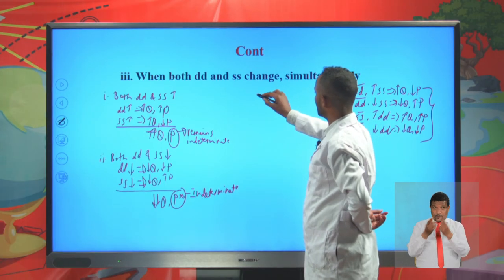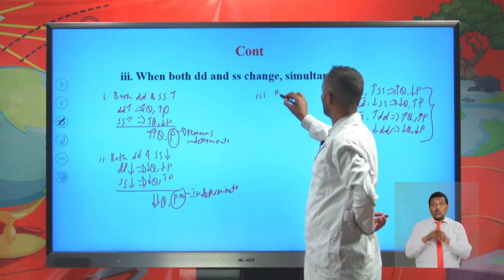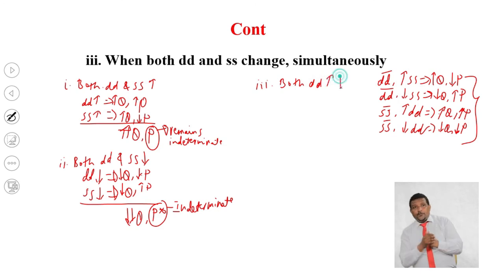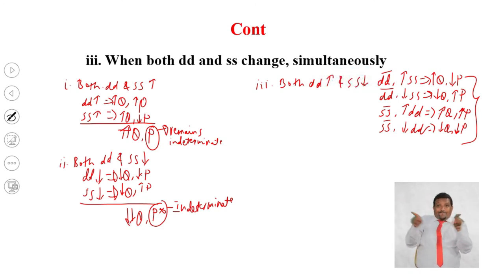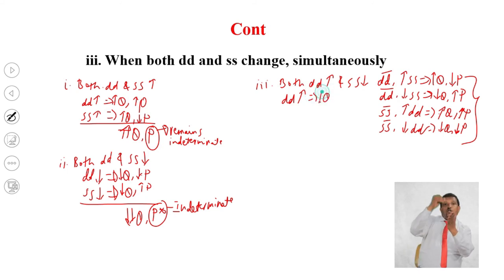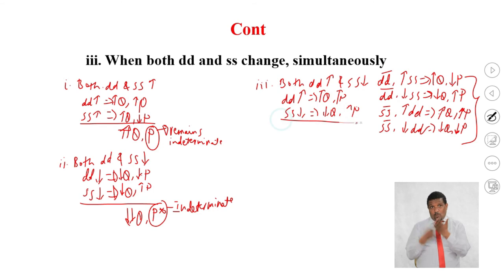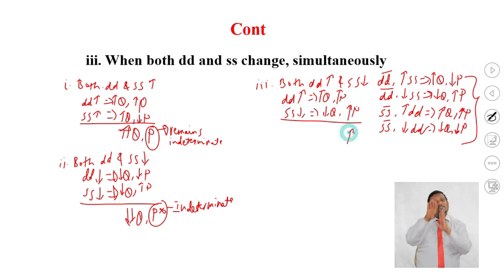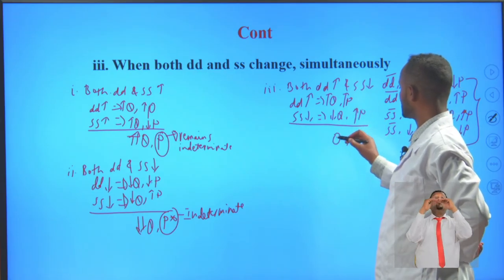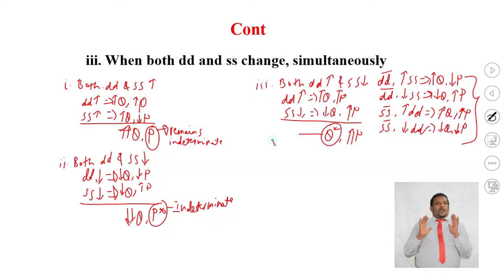When both demand increases and supply decreases simultaneously, both changes push the equilibrium price upward, so the equilibrium price will obviously increase. However, demand increasing raises equilibrium quantity while supply decreasing lowers equilibrium quantity, so the equilibrium quantity remains indeterminate.